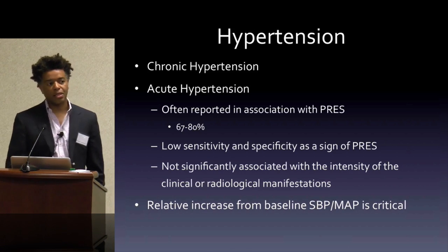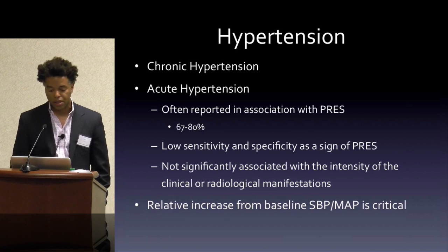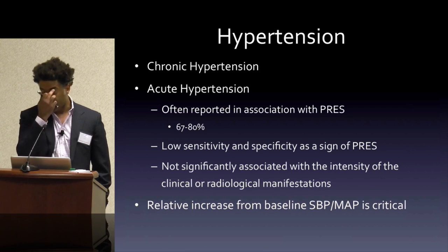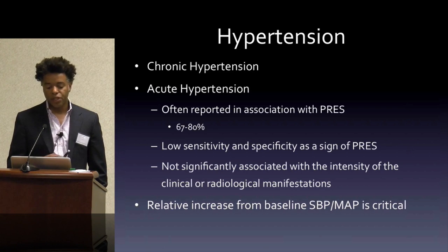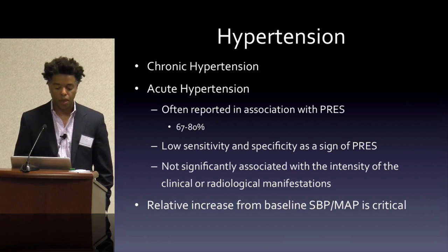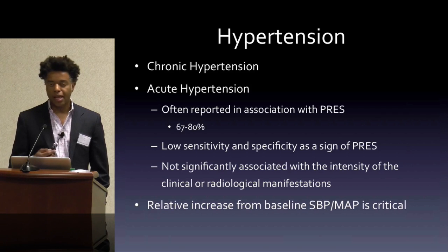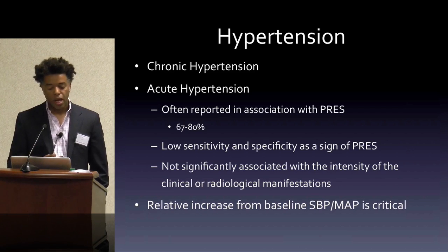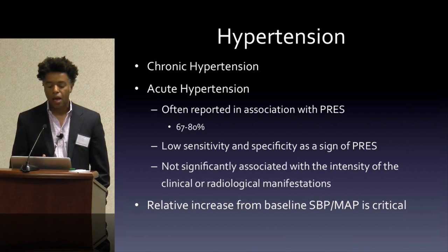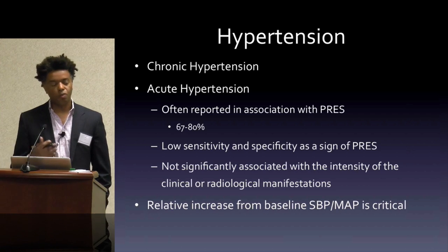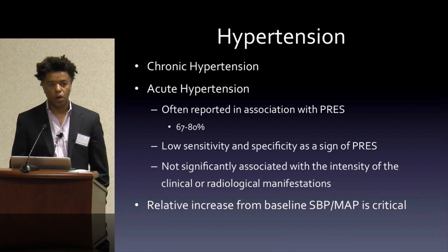One important and confusing point: patients with chronic hypertension are at increased propensity for development of PRES. But notably, patients who are not even hypertensive but have an acute change in their blood pressure also have a higher association with PRES. Hypertension is present in 67 to 80 percent of patients presenting with PRES, but it's not a very good indicator. A better indicator is a relative increase from the patient's baseline systolic blood pressure to their current one, because this rapidly overwhelms the autoregulatory mechanisms of cerebral blood flow, which ultimately leads to that leaky blood-brain barrier.